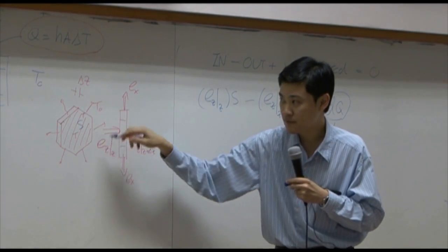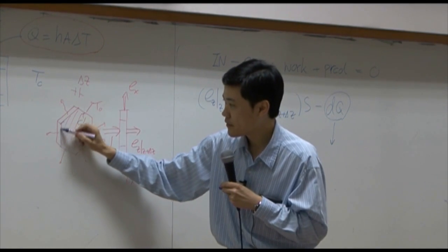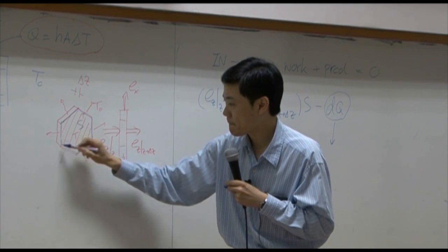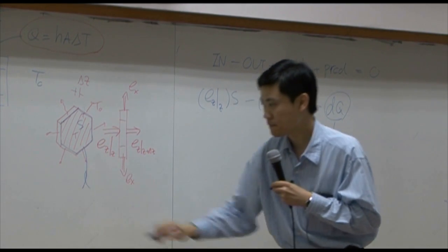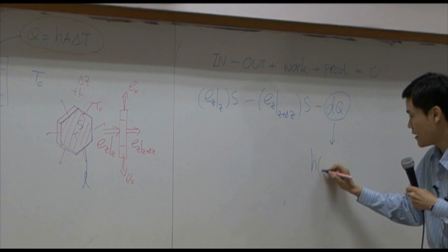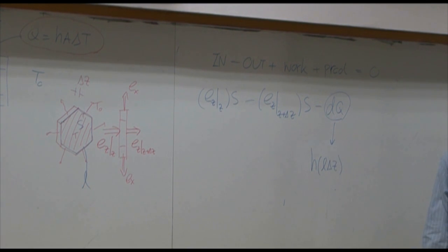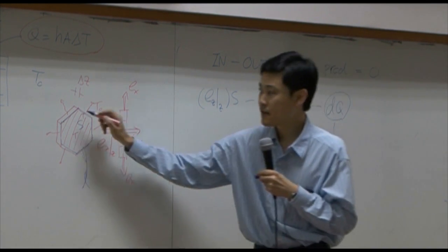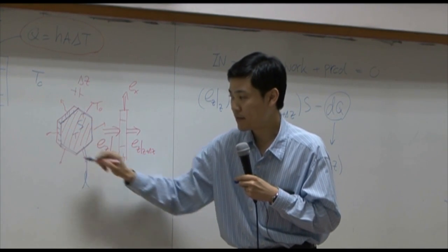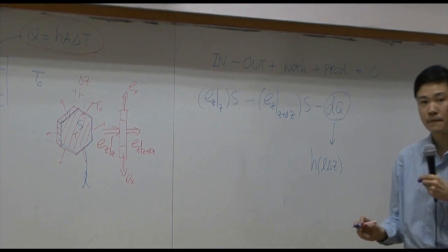If the circumference of this picture, this line, is L, L delta Z, right? L delta Z would be the area highlighted like in blue.